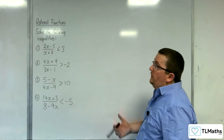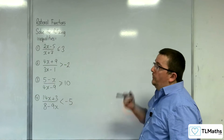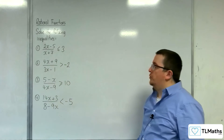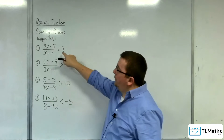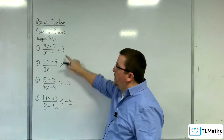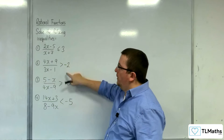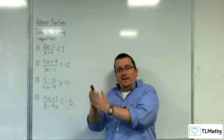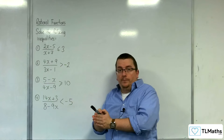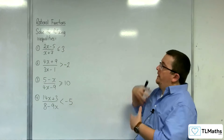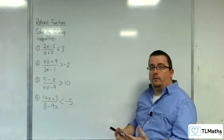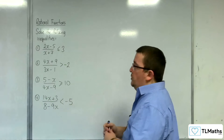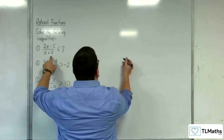In this video I'm going to be solving these inequalities. The first thing we're going to do with each of these is sketch the rational function, then identify the right hand side — this will be y equals 3, y equals minus 2, etc. Draw the horizontal line, find where that intersection point is, and then we can interpret the solution to the inequality. That's going to be my method for each of these. Let's start with the first one.